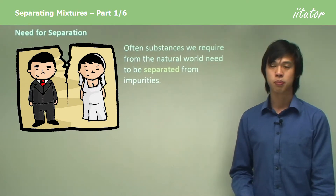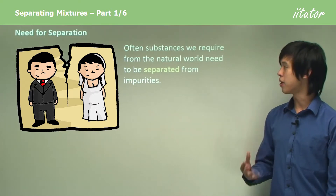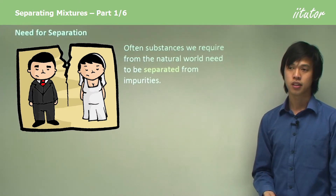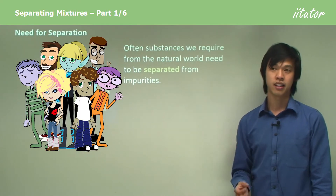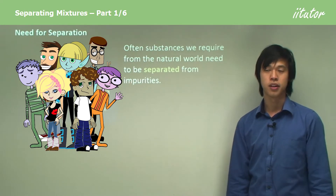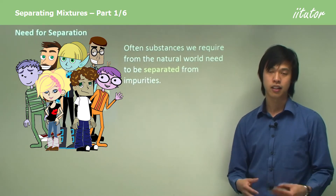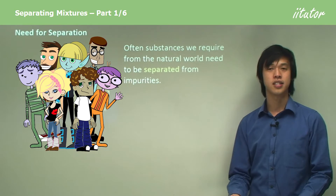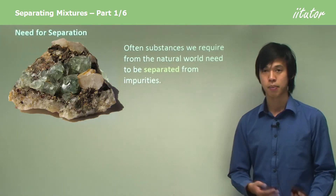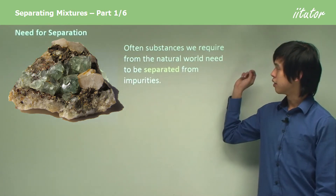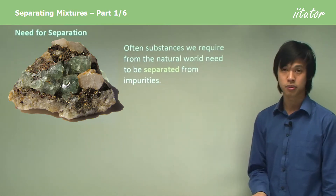So, the need for separation — why do we actually need this process? Well, often substances that we want or need are bonded to other chemicals in the environment. For instance, you rarely find any metals like iron or copper just lying around in a lump on the ground; they're usually bonded to other things. So we need to be able to separate these things to get the iron or copper back. Often these natural substances need to be separated from impurities to get the substance that we desire.